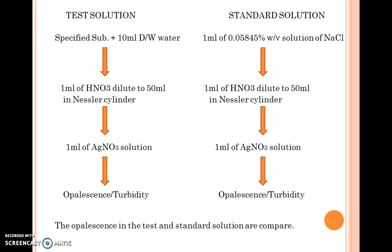After that, keep aside for 5 minutes and compare the turbidity or opalescence produced in the test solution and the standard solution. If the test solution contains less turbidity than the standard, this indicates the chloride impurities present in the substance are within the limit.